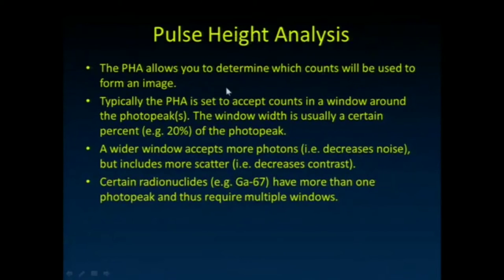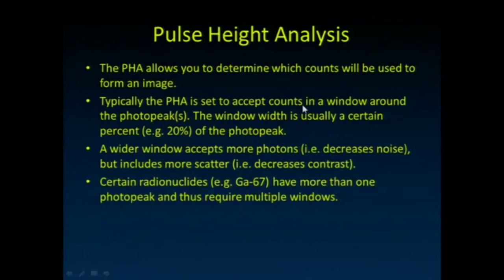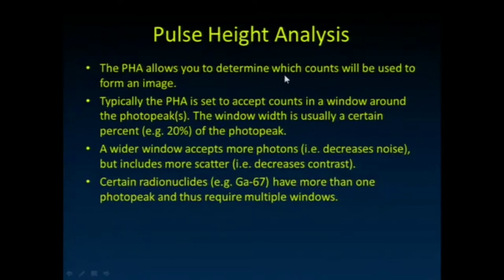We perform pulse height analysis — the total amount of light corresponds to the height of the pulse, allowing us to discern the energy of the detected gamma ray. We typically accept events that fall within a certain window around the peak, called the photo peak window, typically about 20% wide. For 140 keV technetium, we accept from about 126 keV up to about 154 keV. Any pulses whose estimated energy falls in that range are accepted to make our image.